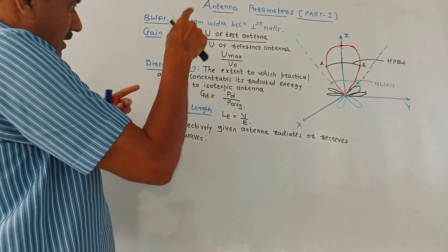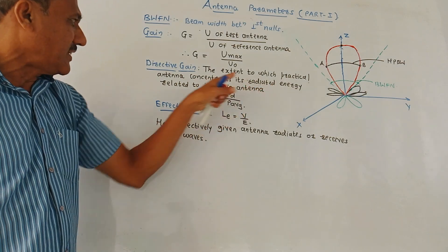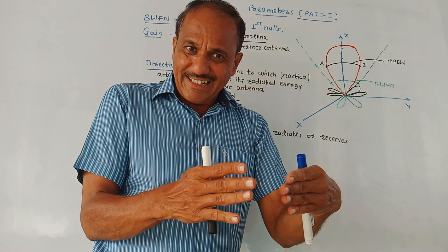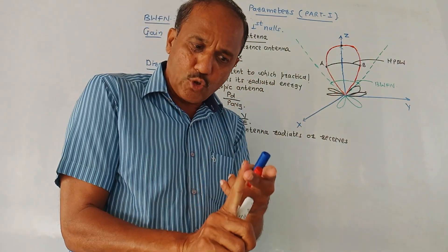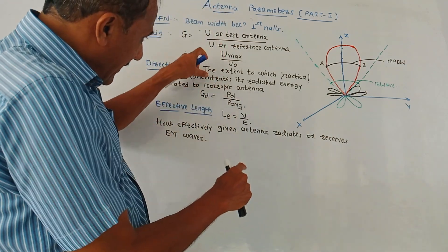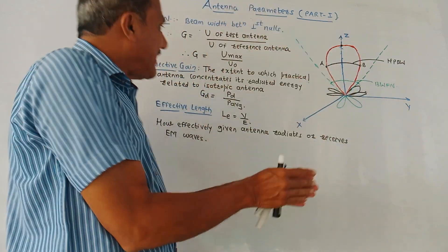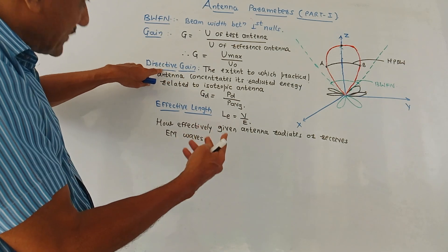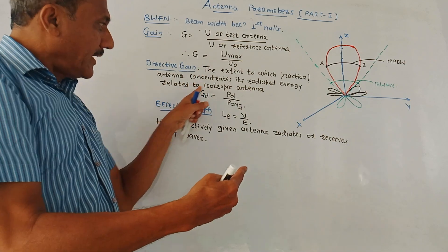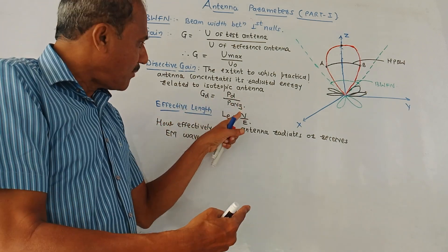Next is directive gain. The definition is: the extent to which a practical antenna concentrates its radiated energy relative to the isotropic antenna. The isotropic antenna radiates equally in all possible directions — it is the ideal antenna. The extent to which a practical antenna concentrates radiation compared to the ideal antenna gives the value of directive gain. The formula is Gd = Pd (power dissipated) divided by power average.